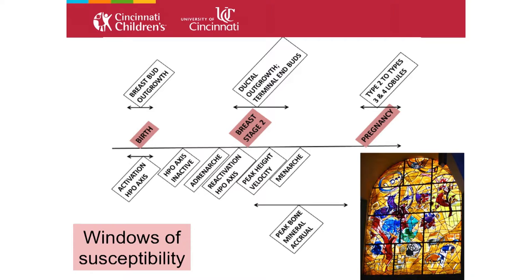Girls who mature earlier also have an earlier age of menarche, but they have a much greater peak height velocity. At the same time, there's peak bone mineral accrual, and several studies show that women with higher bone density have a higher risk of breast cancer — we thought it was lifelong estrogen exposure, but it's probably related to other biologic phenomena.